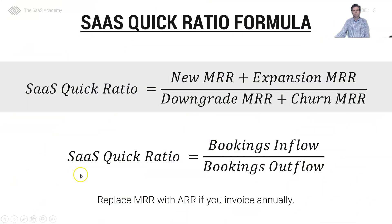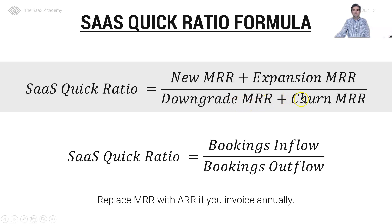So how do we calculate the SaaS quick ratio? It's a pretty straightforward formula. In the numerator we are measuring our bookings inflow or bookings growth — that's new MRR from newly landed customers and expansion from our existing customers. In the denominator we're measuring our bookings outflow or bookings contraction — in this case it's downgrades from existing customers and churn from completely lost customers.